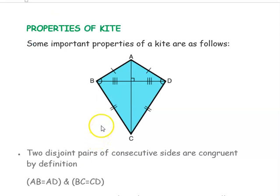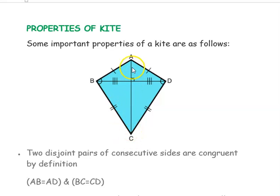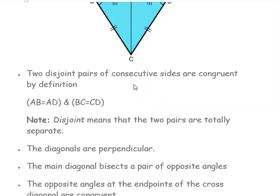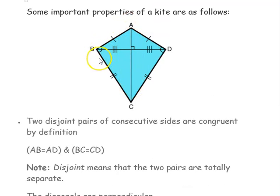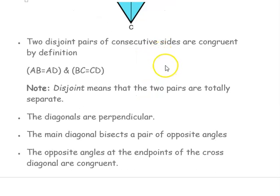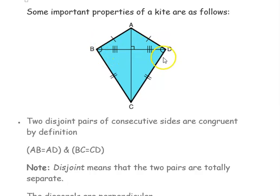Now for the properties of a kite: the two adjacent sides AB and AD are equal in length, and the next two adjacent sides BC and CD are also equal. But AB is not equal to CB. When you draw the diagonals, they intersect at a point where they form a 90-degree angle. The main diagonal — the longer diagonal — bisects the pair of opposite angles, and the lengths on either side of the intersection are equal.